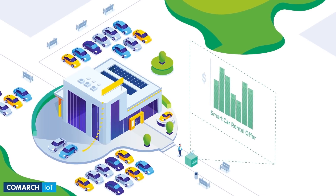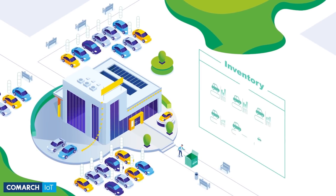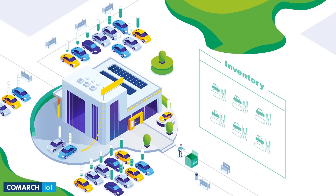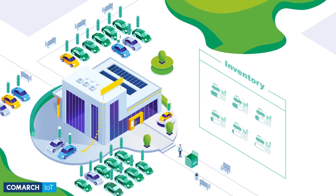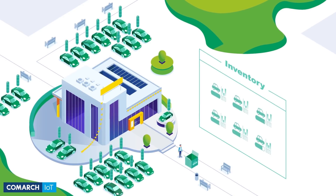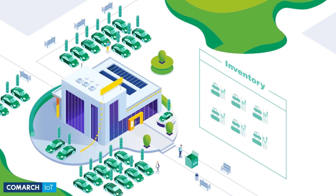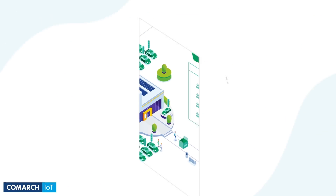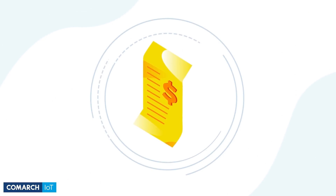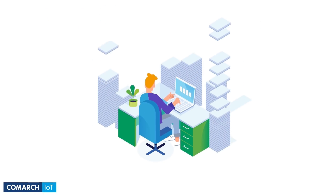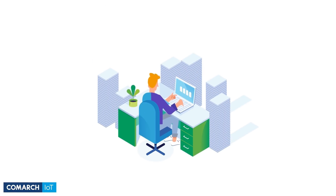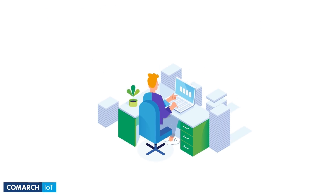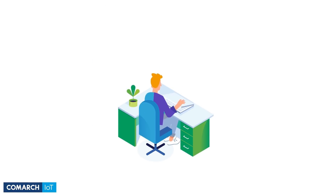IoT Enablement Platform manages the device inventory, automates the onboarding process, updates firmware, and exposes device data. IoT Billing calculates the charging rate and prepares clients' invoices. No more manual sales and data entry or tedious offer configuration.